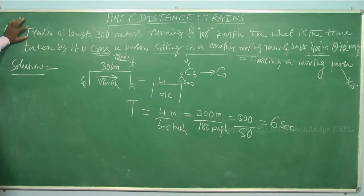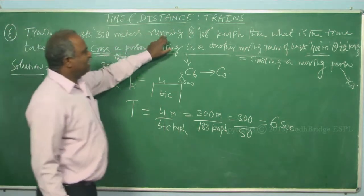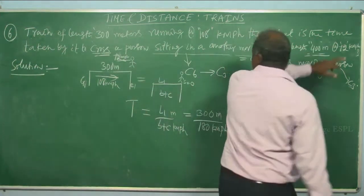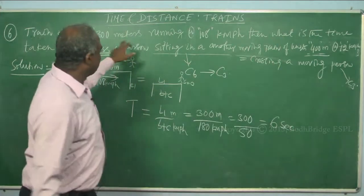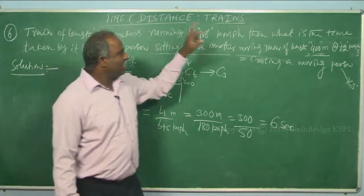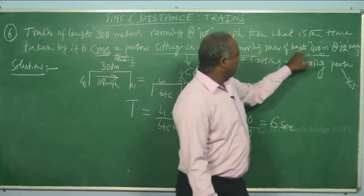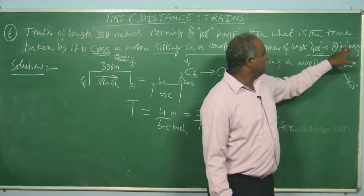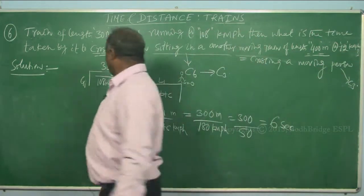Take the question now here please. A train of length 300 meters running at 108 km per hour, then what is the time taken by it to cross a person sitting in another moving train of length 400 meters at the rate of 72 km per hour.